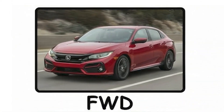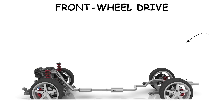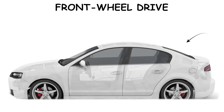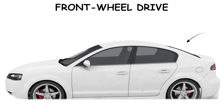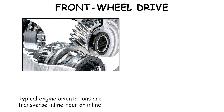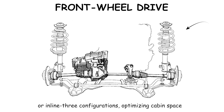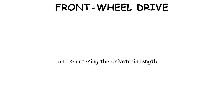Front Wheel Drive is a drivetrain layout where engine torque is transmitted exclusively to the front axle through a transaxle integrating the transmission and differential. Typical engine orientations are transverse inline-4 or inline-3 configurations, optimizing cabin space and shortening the drivetrain length.